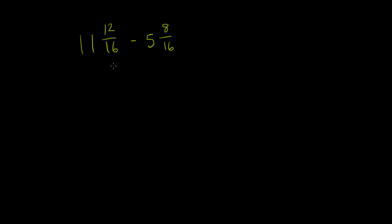Let's figure out what 11 and 12 sixteenths minus 5 and 8 sixteenths is, and then we might have to simplify it down to lowest terms. So the way I like to do these is to separate out the whole number part of the mixed numbers from the fractional part.